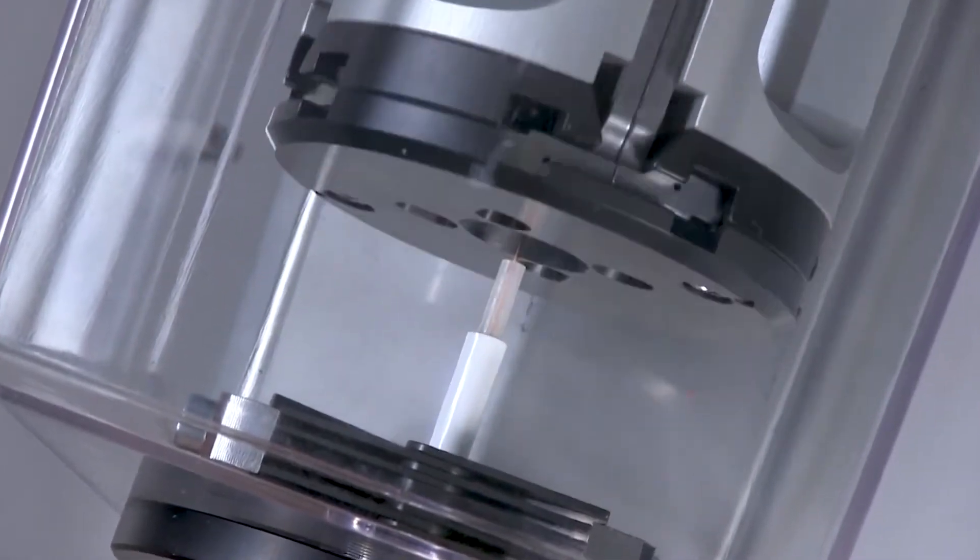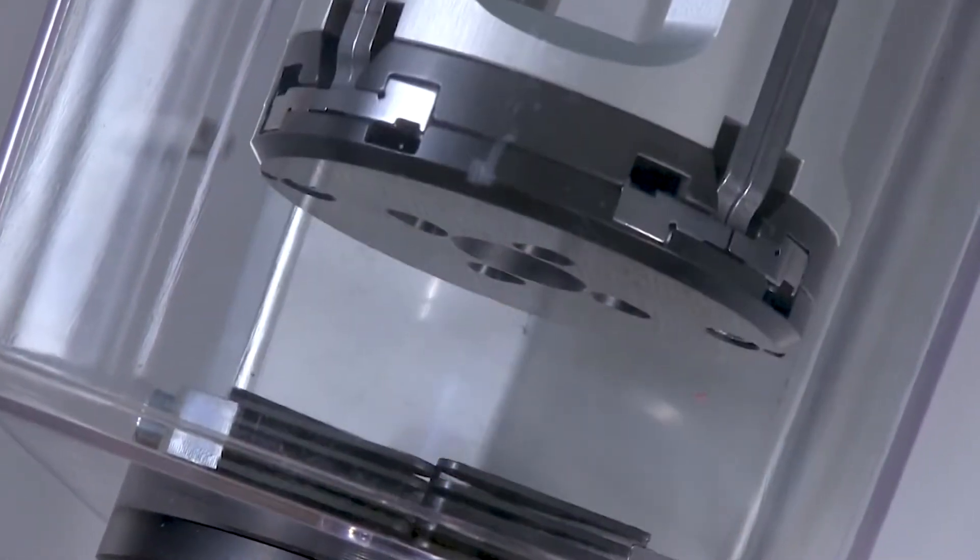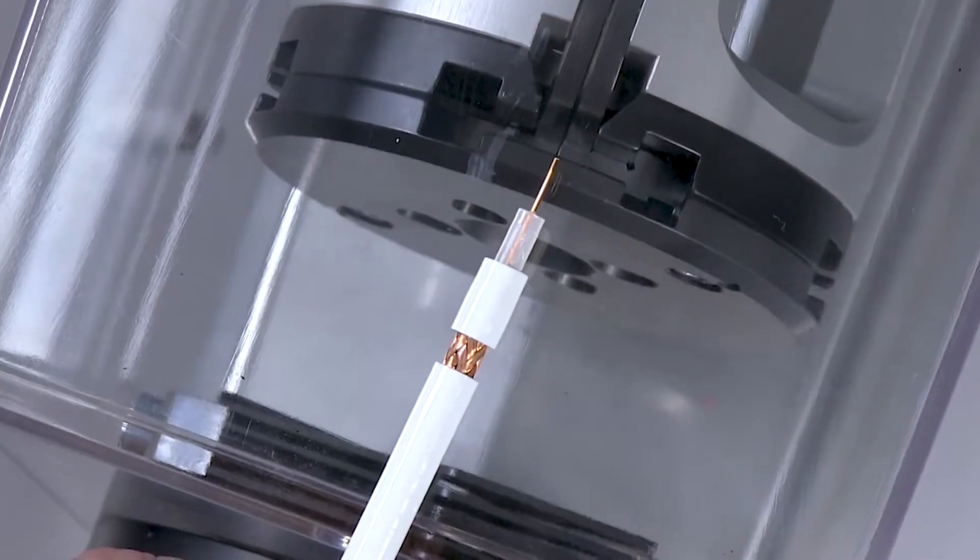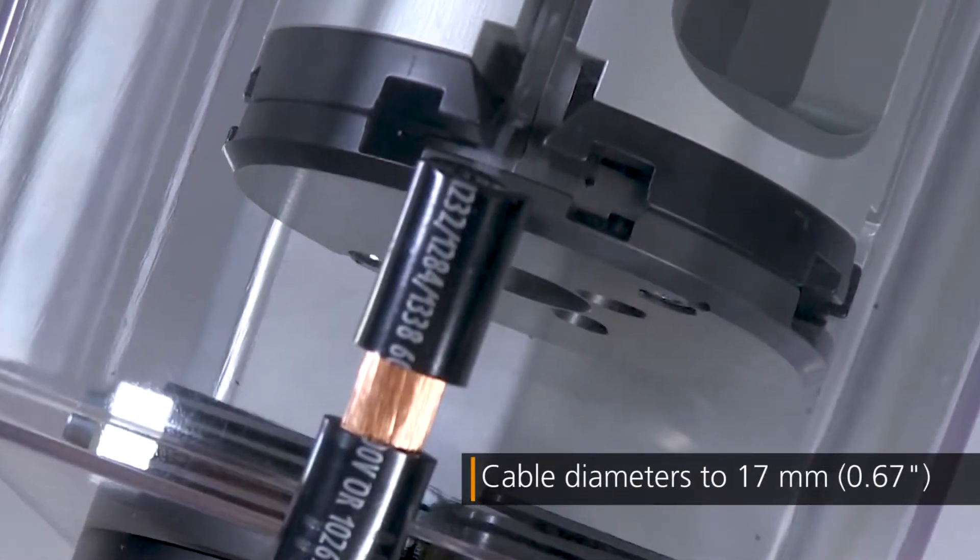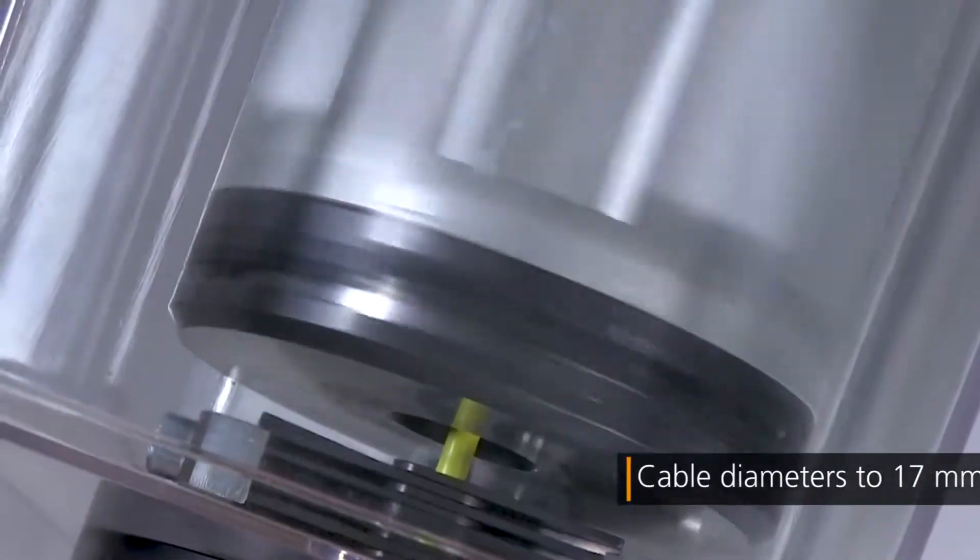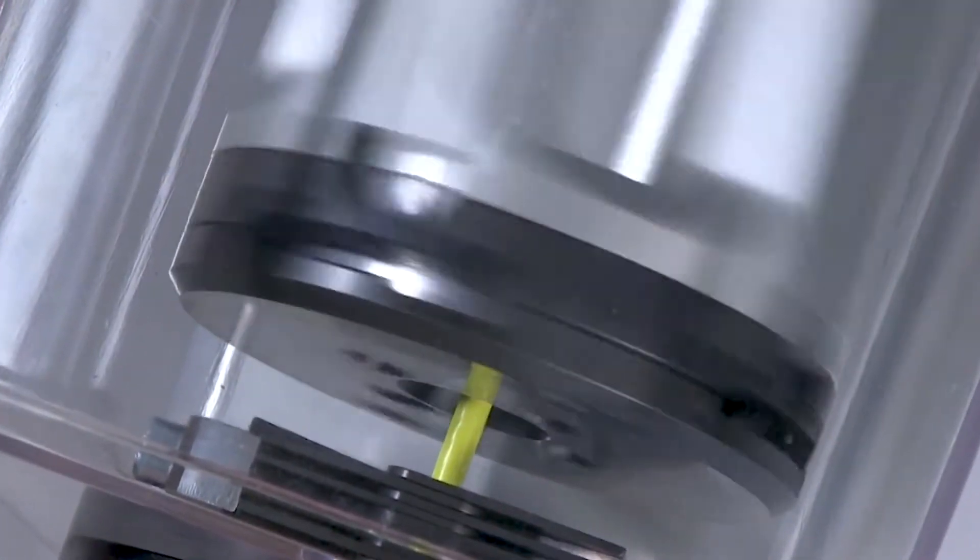The Coax Strip 6580 is one of the latest generation of coaxial cable stripping machines available from Schleuniger and delivers excellent performance and functionality for an extremely wide processing range.